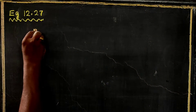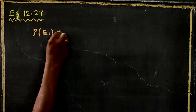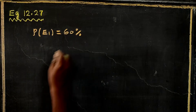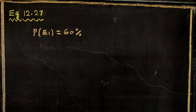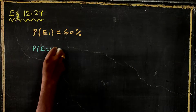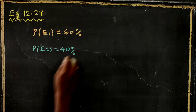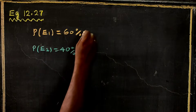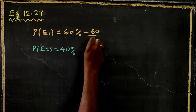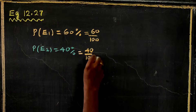The probability of E1 is equal to 60%, that is 60 by 100. The probability of E2 is equal to 40%, that is 40 by 100.